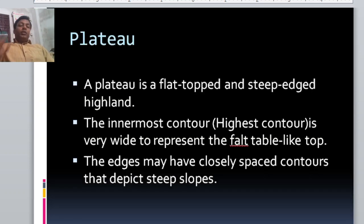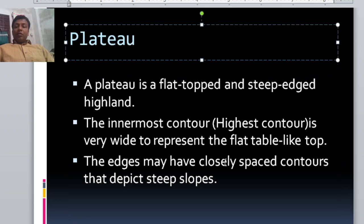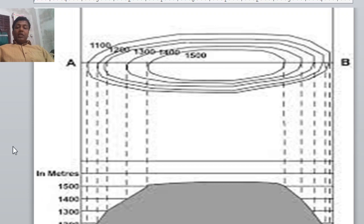Now flat view. As you know that, flat view is a tabletop flattened land. So, flat view is a flat top and the steep edged landform. The innermost contour, highest contour is very wide. They represent a flat table-like top, and there may have closely spaced contours that depict steep slopes as you have seen in this picture.